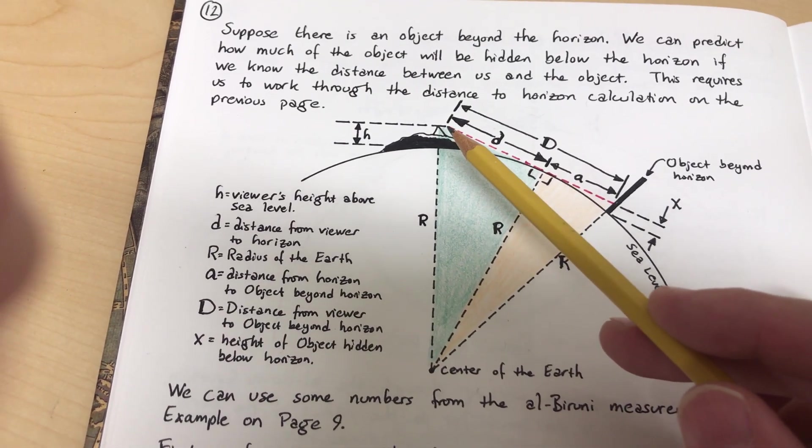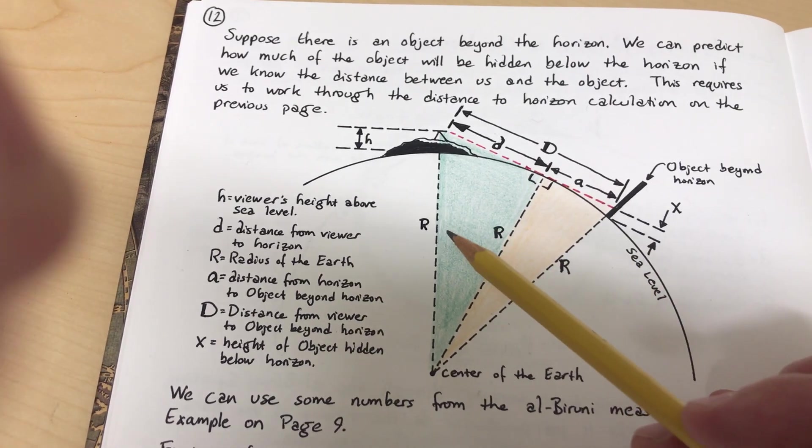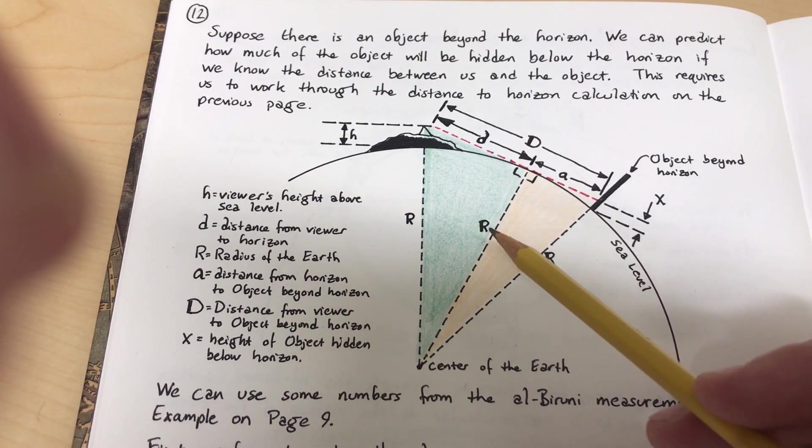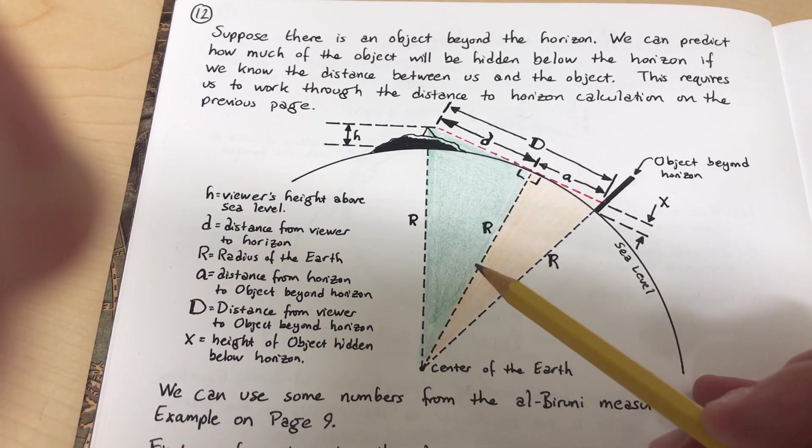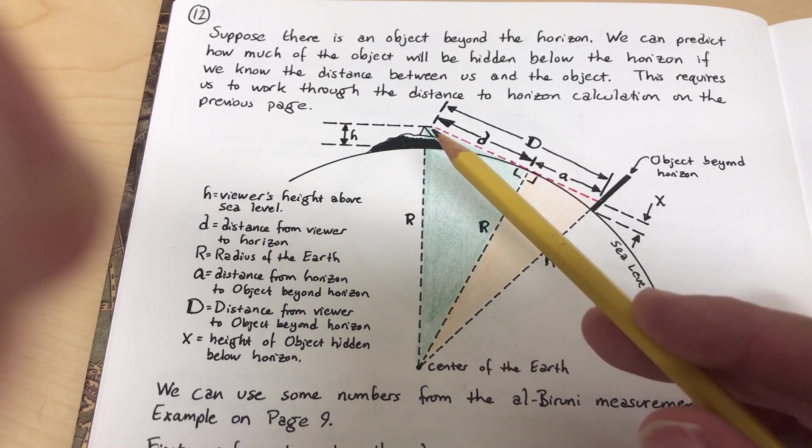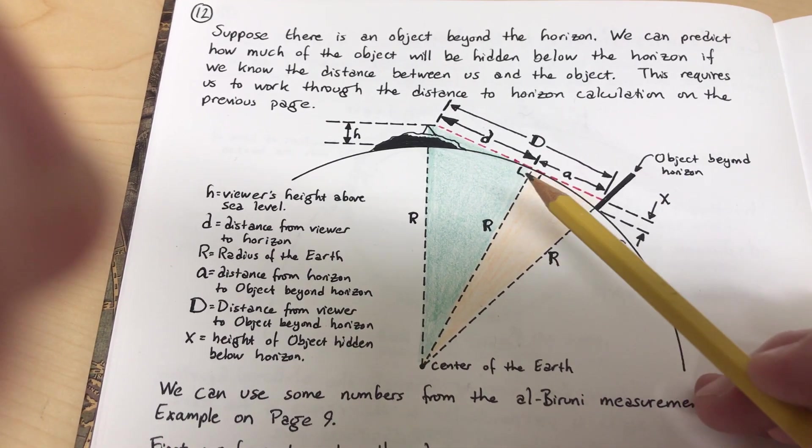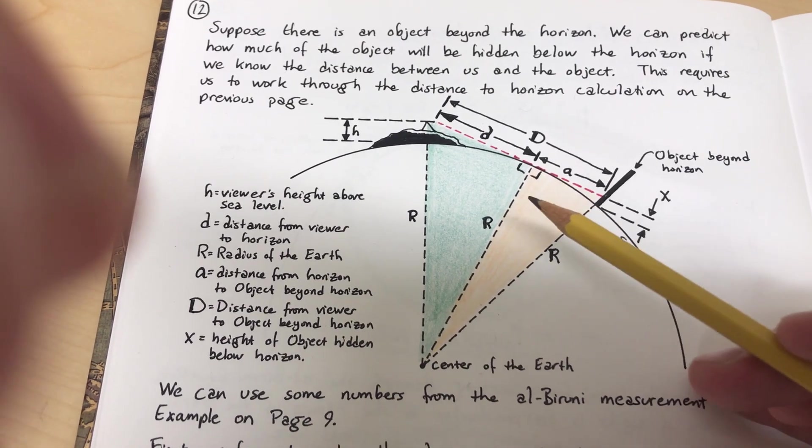You are the hypotenuse of a right triangle. So you're on top of the radius, and then here's the other radius. And then here is the short leg of the triangle, your distance to the horizon.